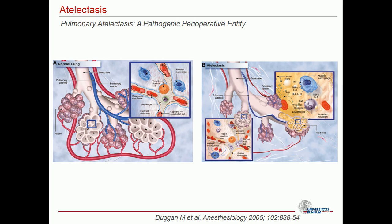Here you can see a diagram from a Canadian workgroup by Mr. Duggan. On the left side, a normal lung with intact cell integrity and perfusion. On the right side, a heterogeneous picture of a lung with atelectasis, where epithelial cell integrity is suspended. There is damage to type one and type two cells, activation of the immune response via release of cytokines and TNF-alpha, and activation of coagulation. There is also increased accumulation of liquid and hyaline membranes, further limiting gas exchange. This is not a local lung problem but can imply systemic consequences such as SIRS, sepsis, pneumonia, and so on.